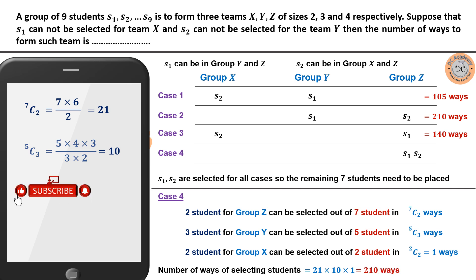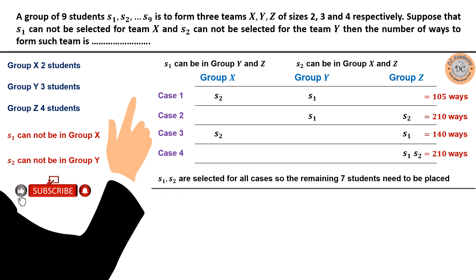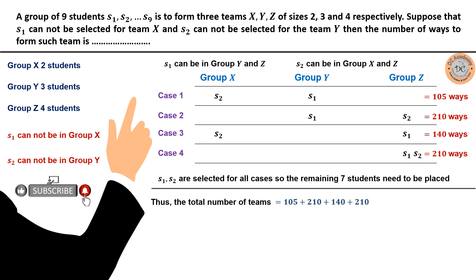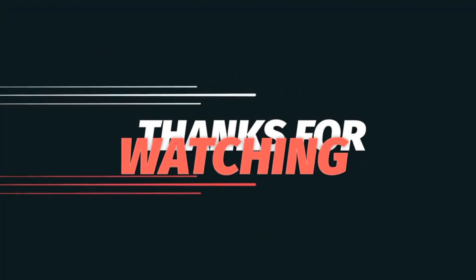We have computed all four cases: Case 1 = 105, Case 2 = 210, Case 3 = 140, Case 4 = 210. Since the cases are mutually exclusive, the total number of ways to form the teams under the given conditions is 105 + 210 + 140 + 210 = 665. So 665 is the correct answer for this JEE Advanced 2024 problem.